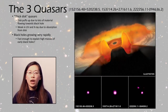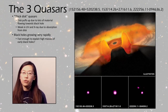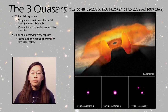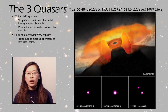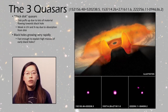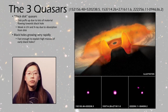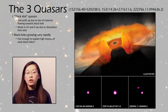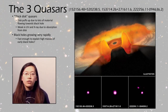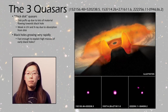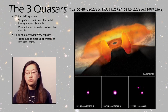Last of the quasars on this year's DSO list are three thick disc quasars, where the disc around the supermassive black hole has puffed up due to a lot of material falling in. This disc tends to block a lot of light, meaning these quasars are identified by being weak in ultraviolet and also X-ray. These thick discs are important because they allow the central black hole to grow very rapidly — possibly fast enough to explain how early black holes got so massive so quickly.